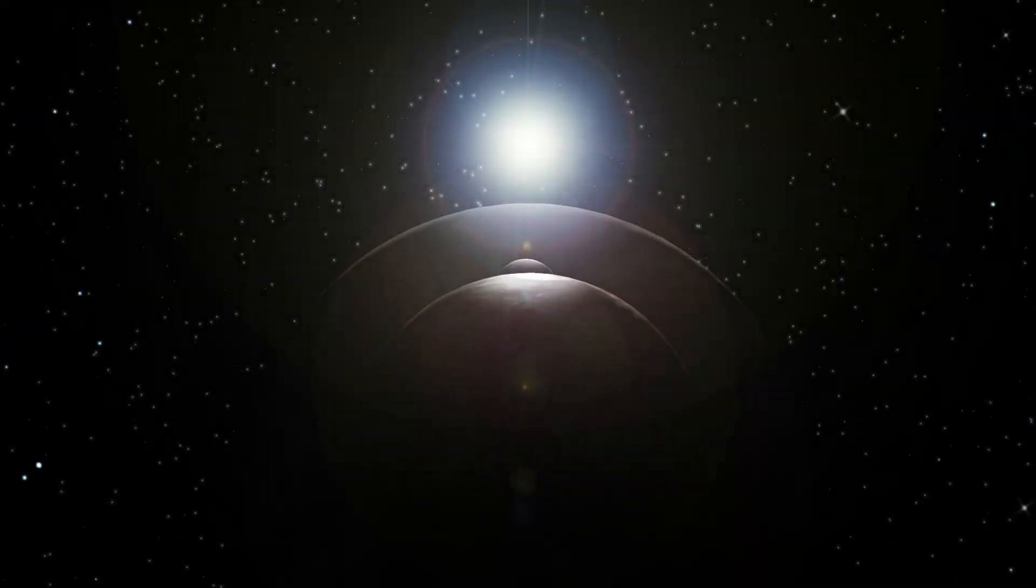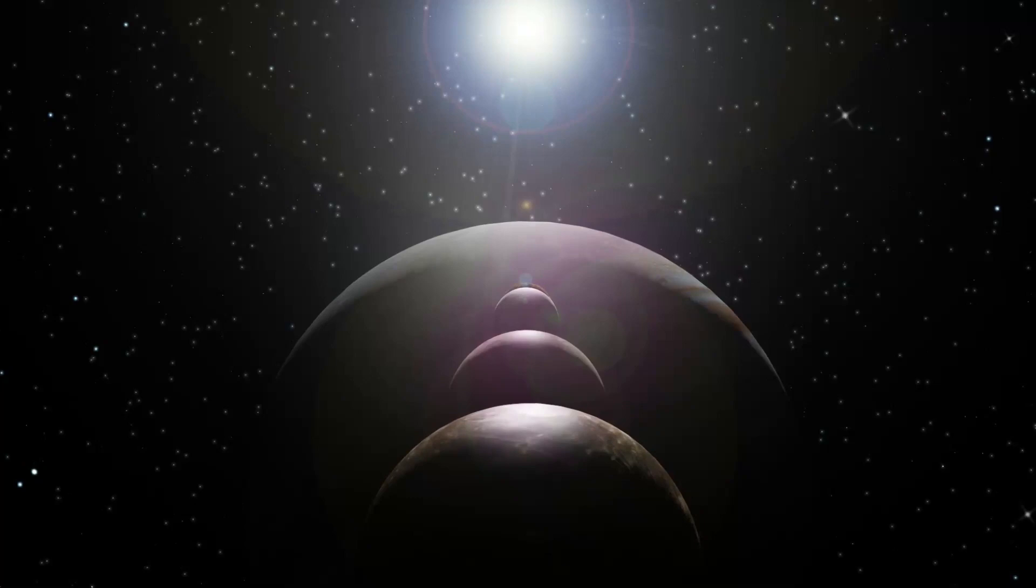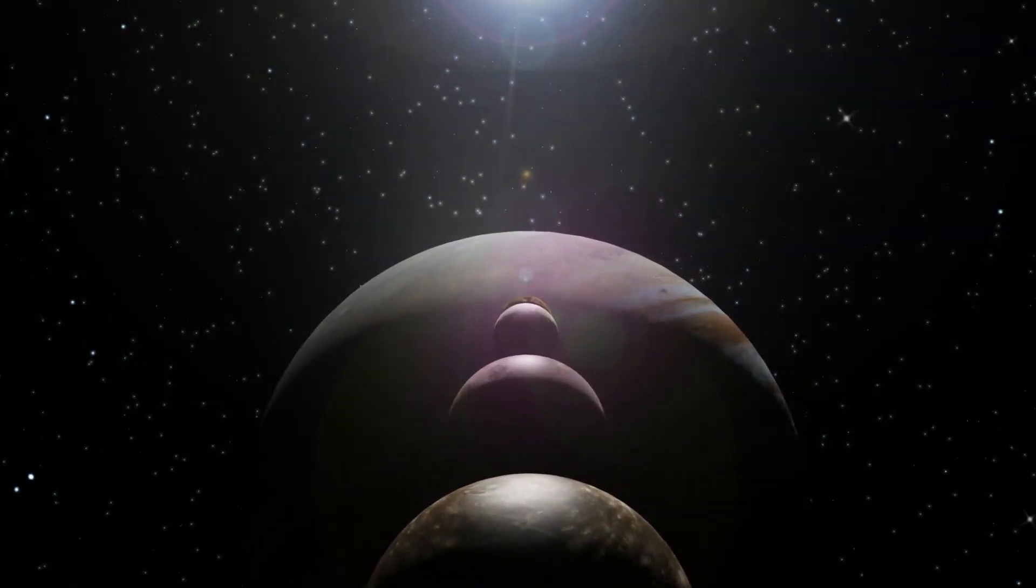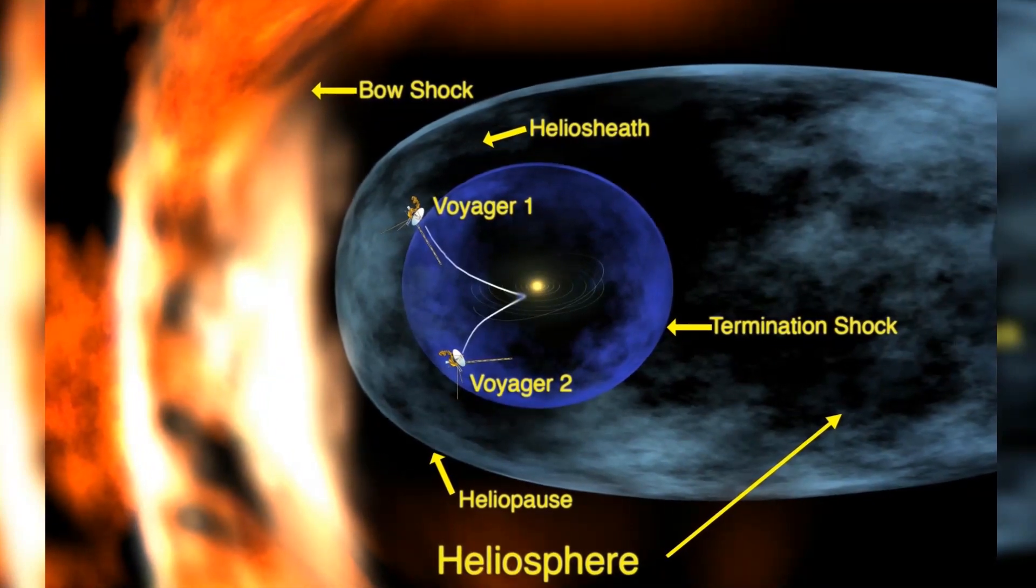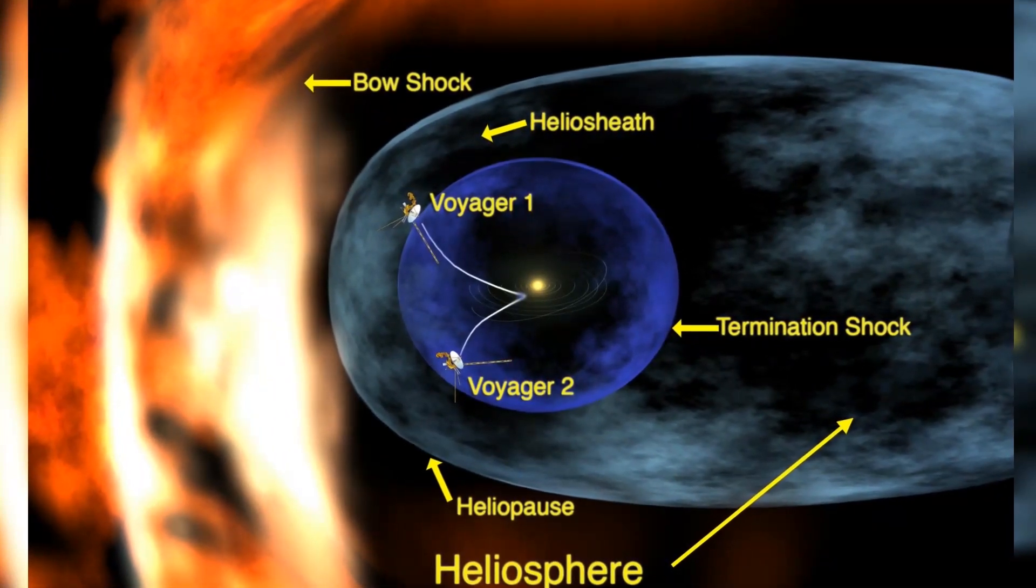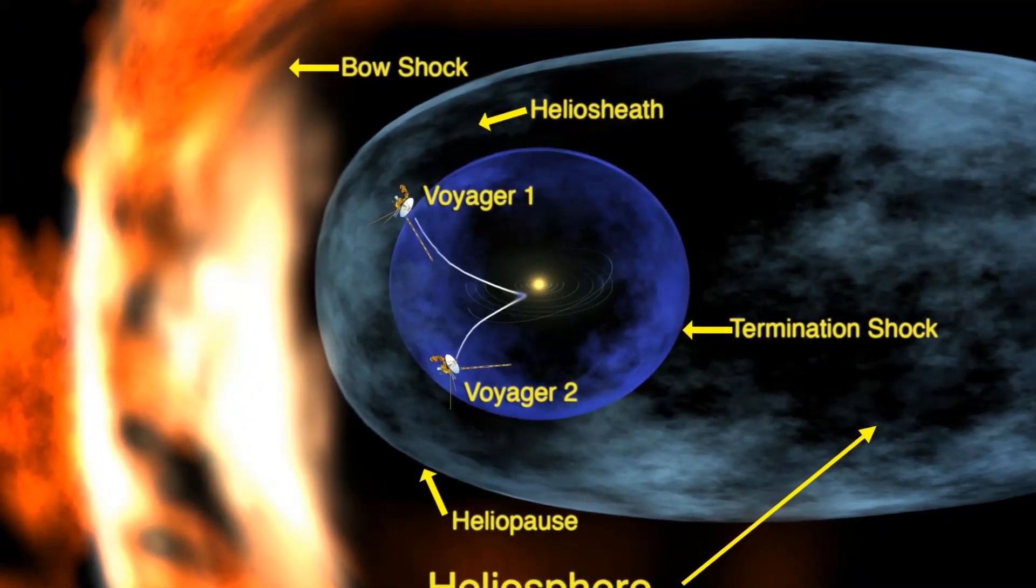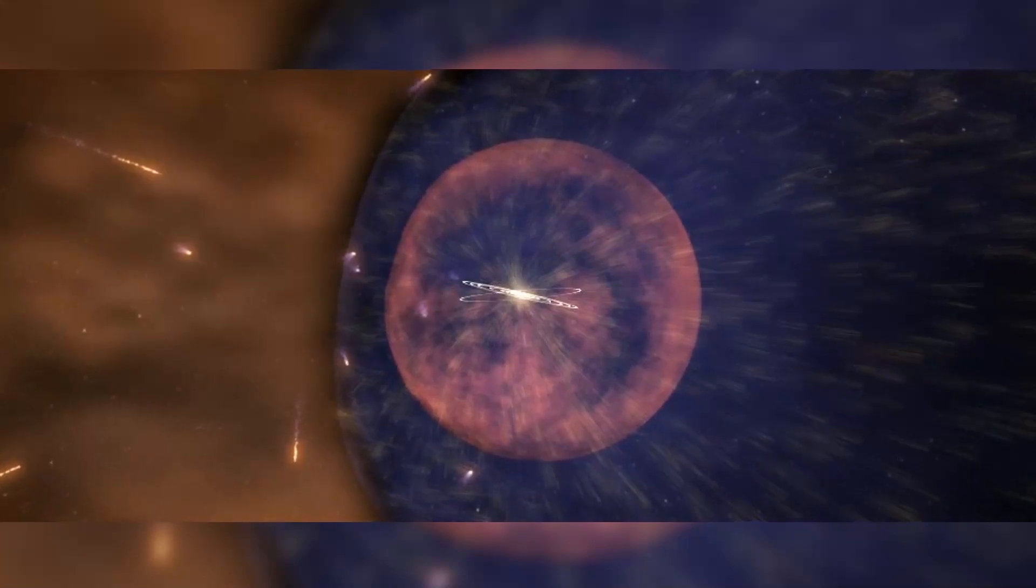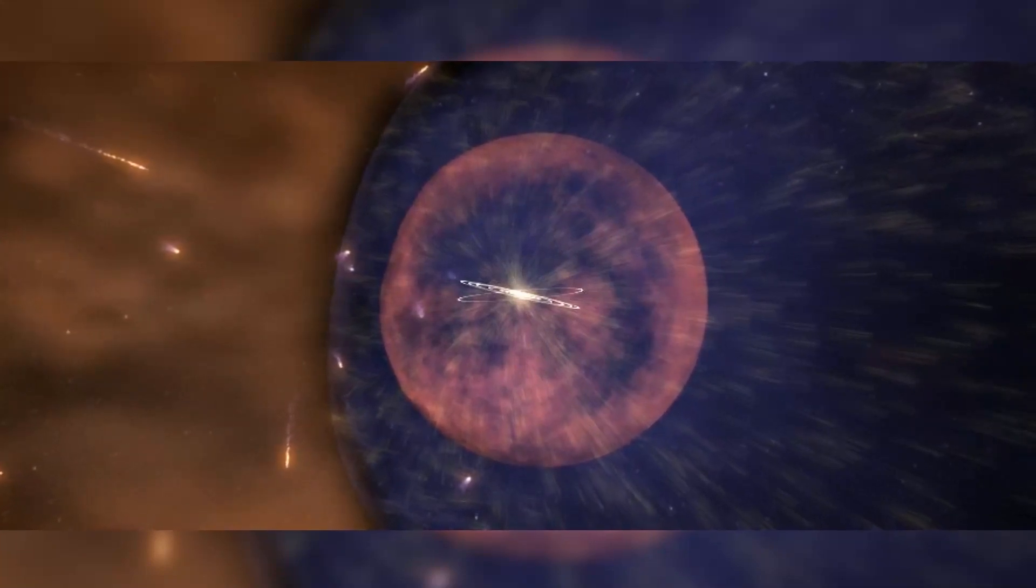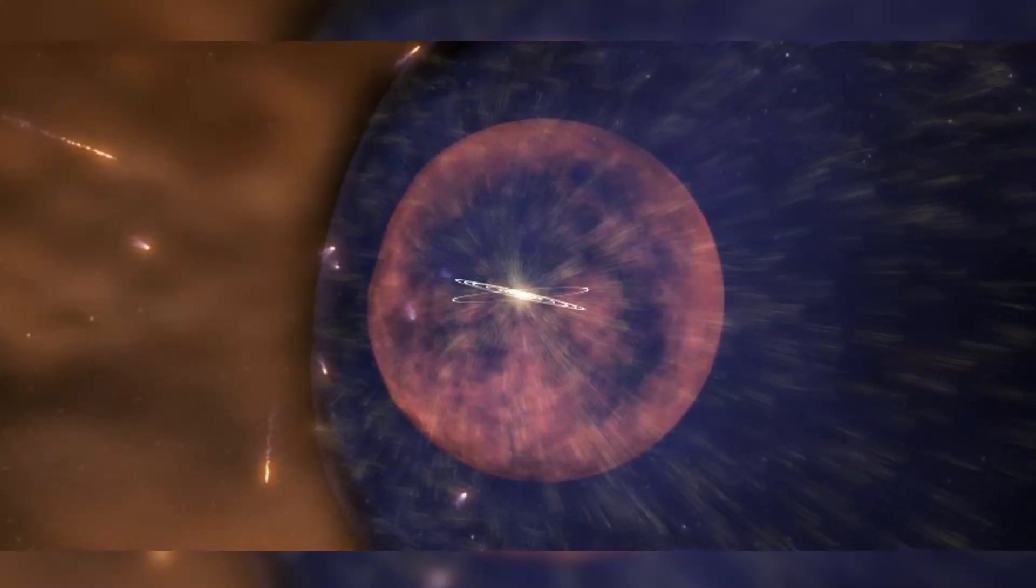Four years ago, the Voyager 2 probe became just the second human-made object in history to exit the solar system and officially enter interstellar space. On November 5, 2018, the craft officially left the solar system as it crossed the heliopause, the boundary that marks the end of the heliosphere and the beginning of interstellar space. This area is the outermost region of the solar system, sometimes referred to as the bubble, and is located around 119 astronomical units from the sun.